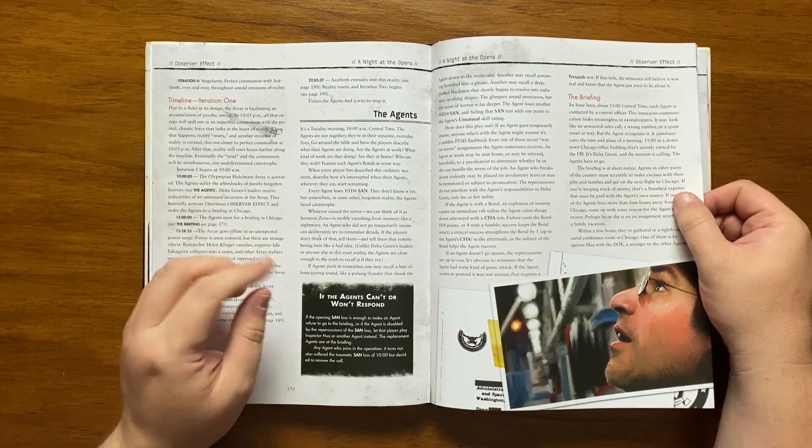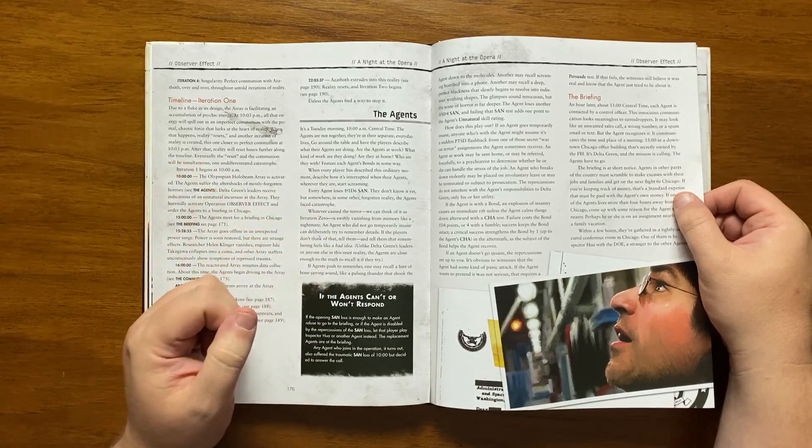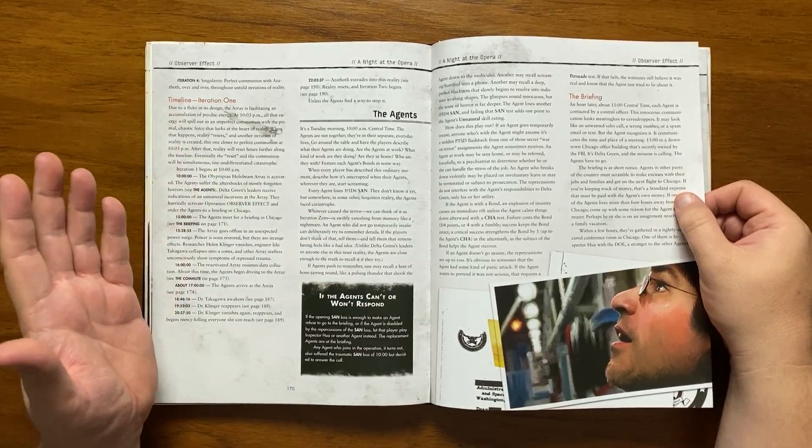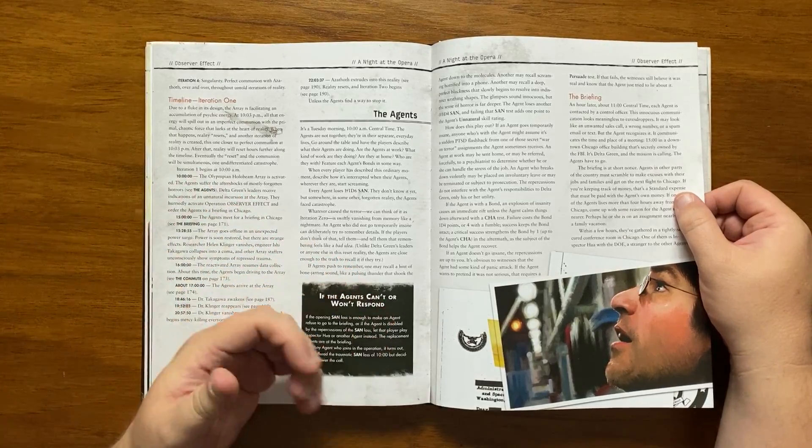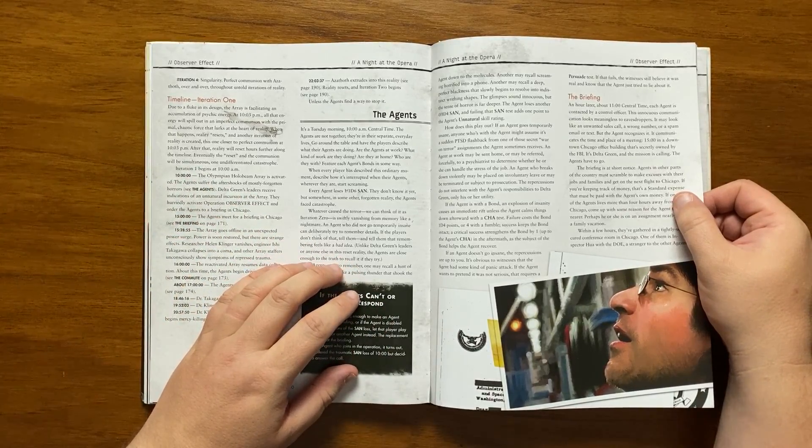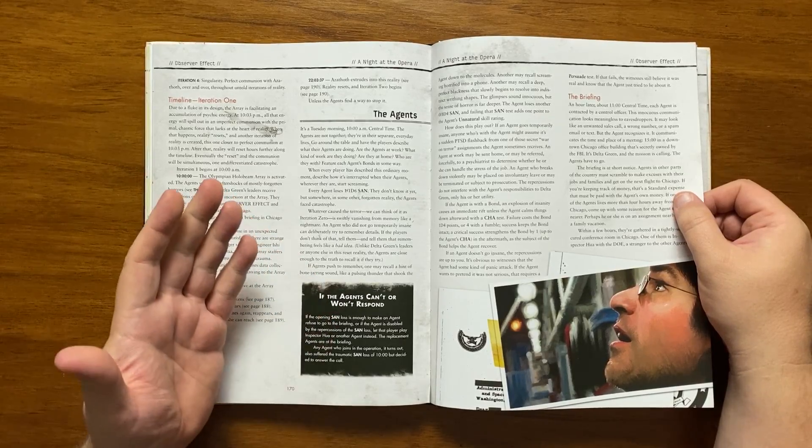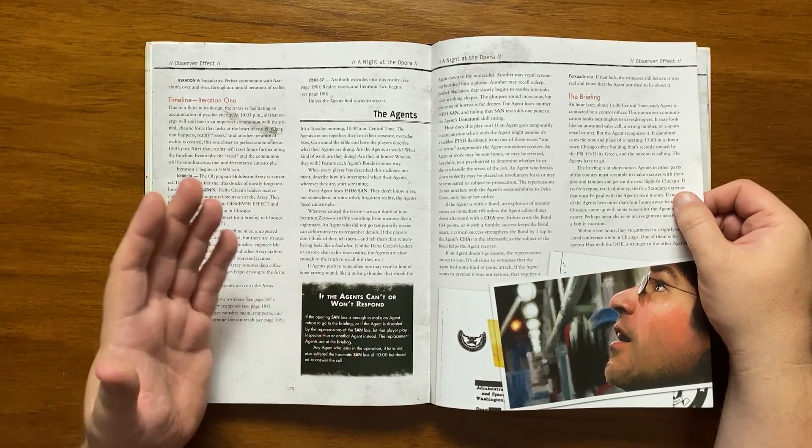With me so far? Don't worry if you're not, all will become clearer as we move on. So we move back to Iteration 1. A fluke in the design of the array means it is accumulating psychic energy which will spill out at 2203 and allow imperfect communion. Reality then resets itself and starts again, later each time.